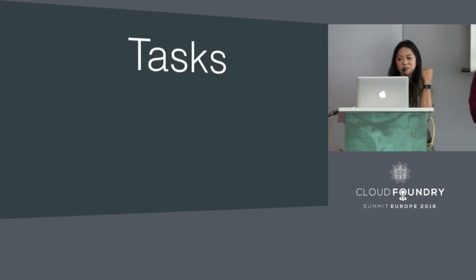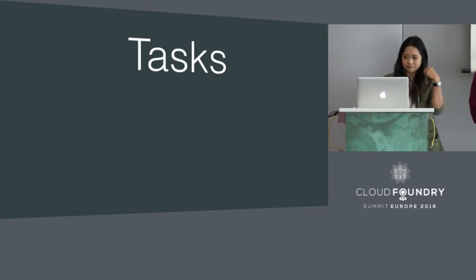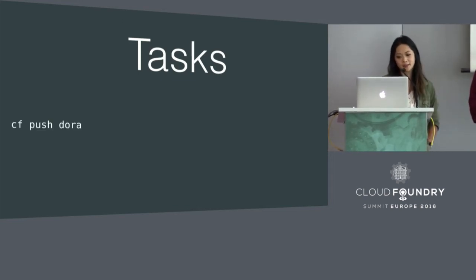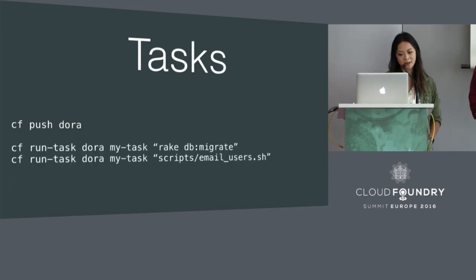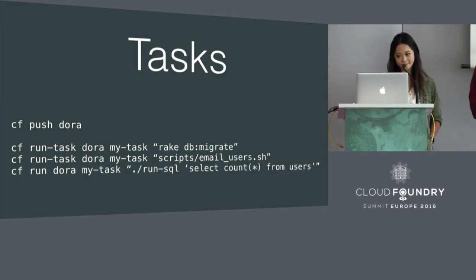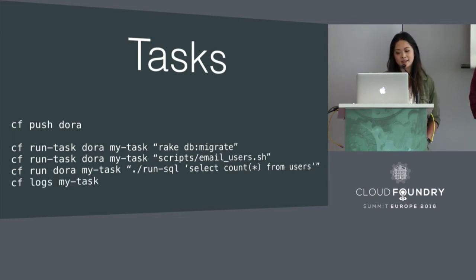So let's say you push an app called Dora with v2 or v3 - you can run a migration, send an email blast to your users, make a query against your database - pretty much anything you want. You'll also have access to the output of every task you run and a history of the tasks run against your app.